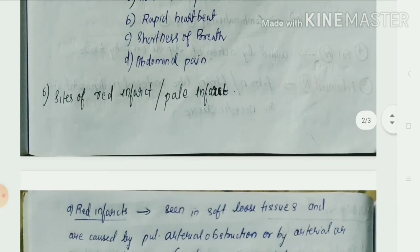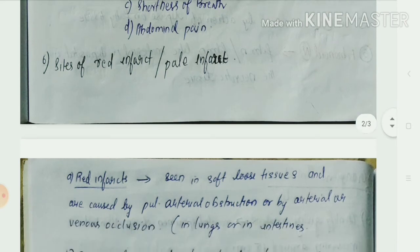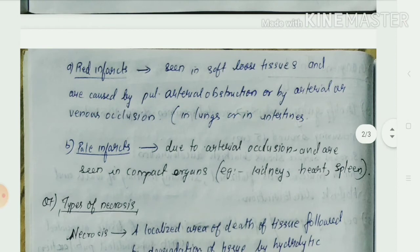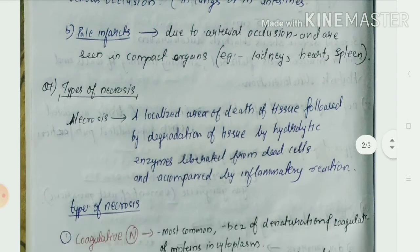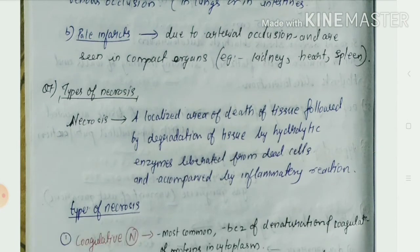The main cause is blockage of arterial blood supply. Red infarcts are seen in soft loose tissues and are caused by pulmonary arterial obstruction or by arterial or venous occlusions, mainly in lungs or intestines. Pale infarcts are due to arterial occlusion and are seen in compact organs like the kidney, heart, and spleen.